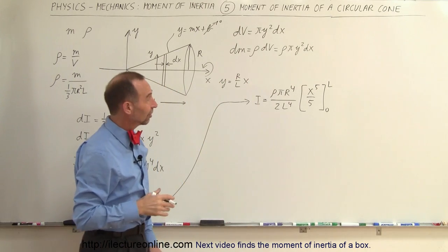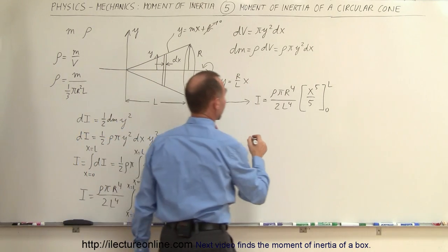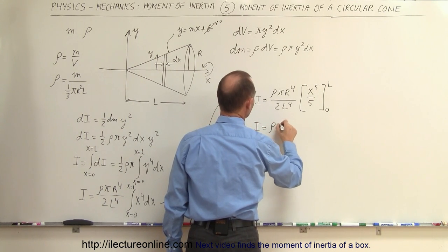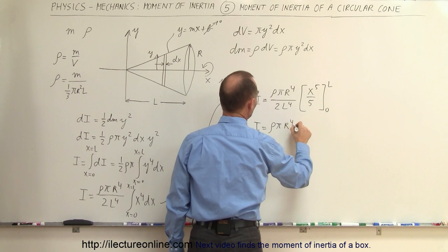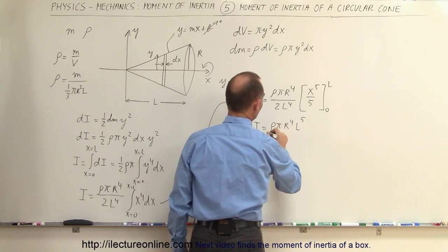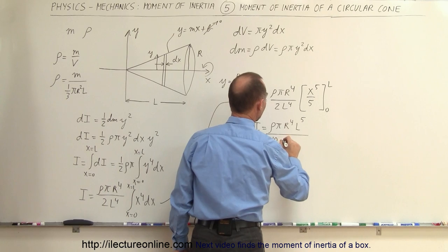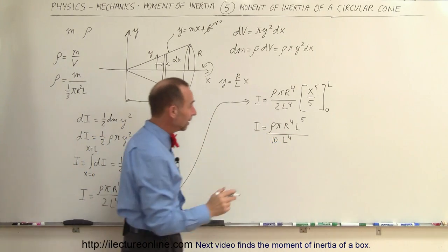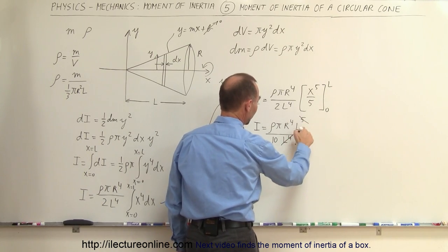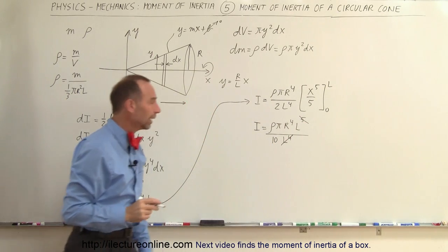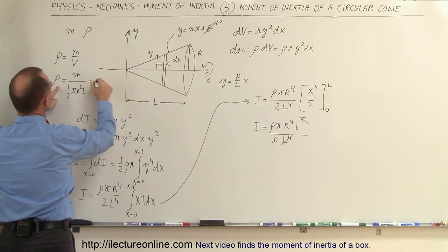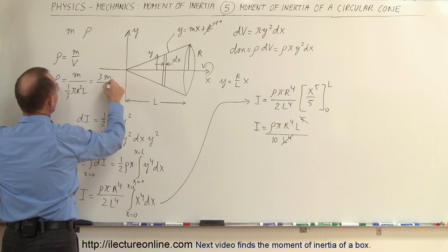Plugging in the limits, the lower limit gives zero and the upper limit gives L to the fifth. So I equals density times pi times R to the fourth times L to the fifth, divided by 2 times 5, which is 10 L to the fourth. The L to the fifth and L to the fourth simplify, leaving just L in the numerator. Now we substitute density as 3M divided by pi R squared L.